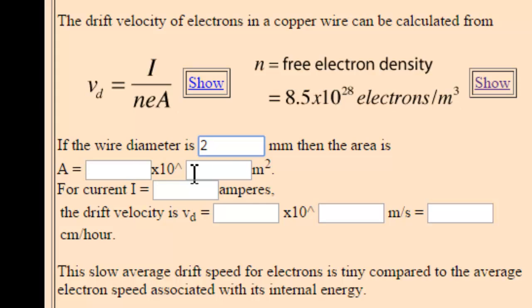And what's the area going to be? You're going to find out that is equal to 3.14 times 10 to the negative 6. What is the current going to be? Let's say the current is 10 amps. And it basically shows that the drift velocity is 2.337 times 10 to the negative 4 meters per second, or you could say 84 centimeters per hour, which isn't very fast.